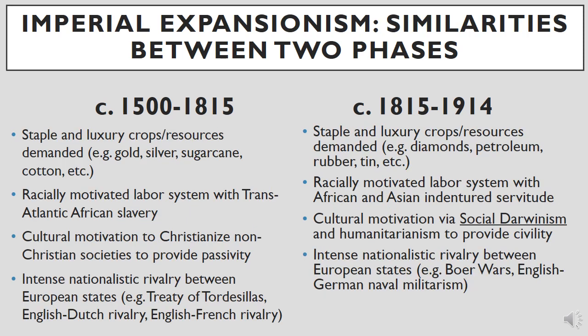Although there are great differences between these two phases of expansionism, there are significant points of comparison. Between 1500 and 1815, one of the main economic motives was the acquisition of staple and luxury crops and resources in high demand — gold, silver, sugarcane, spices, and cotton. After 1815, as industrialization progressed, the demand shifted to include diamonds, petroleum, rubber, tin, and other industrial metals and mineral resources, though that in no way negated the continued demand for previously mentioned goods.